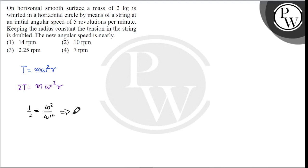This is the point of 5 revolutions per minute, so omega dash square is equal to 2 times omega square.